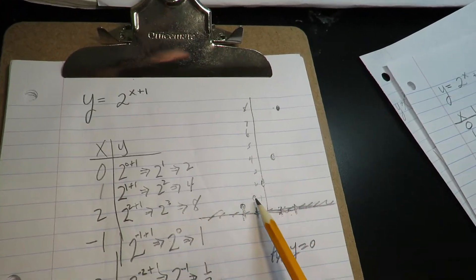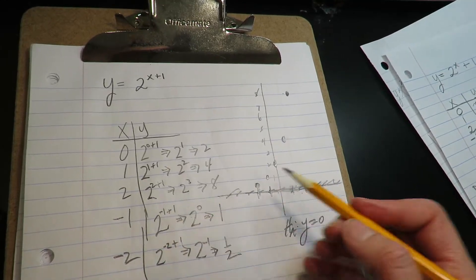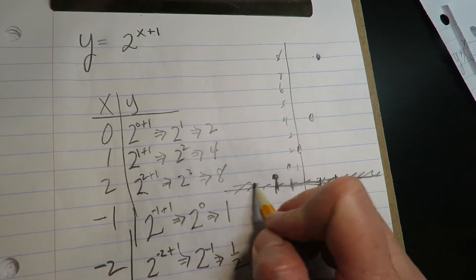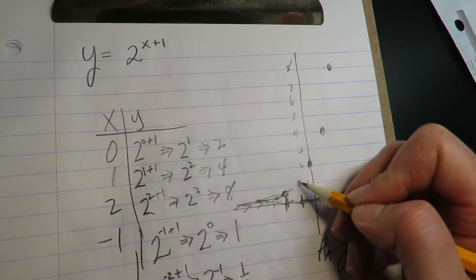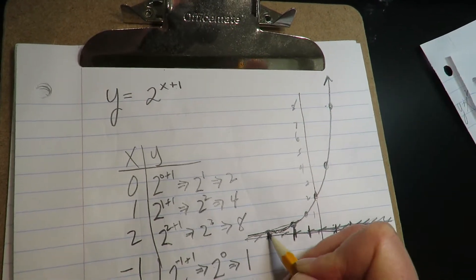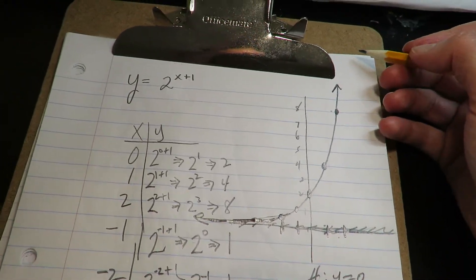So this graph is actually pushed back, because usually the y-intercept would be a one, but everything's being pushed to the left. Okay, so everything's coming back this way. So it's the same idea, the exponential growth. It's flat and then it grows very rapidly.